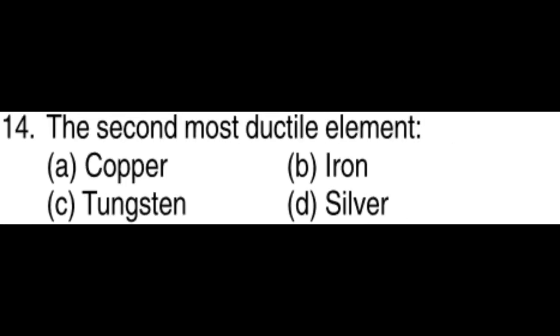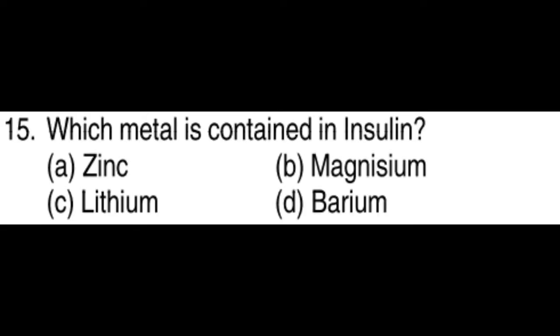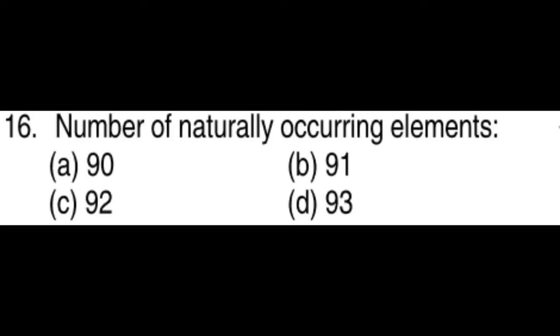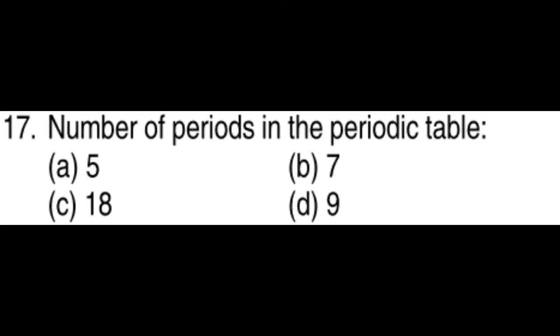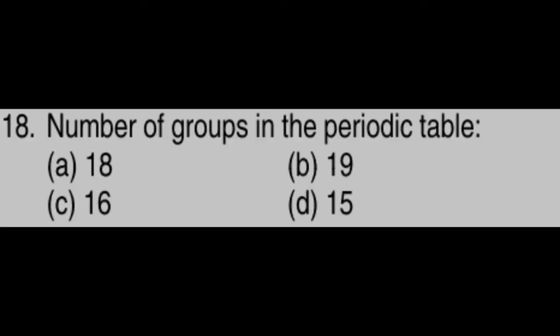The second most ductile element: Tungsten. Which metal is contained in insulin: Zinc. The number of naturally occurring elements: 92.